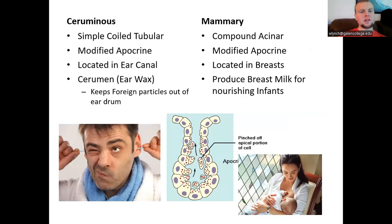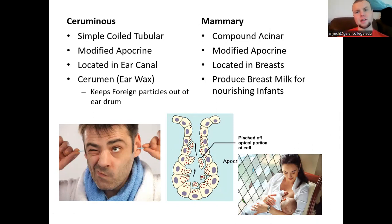In the ear, ceruminous glands are simple coiled tubular glands that secrete cerumen — earwax — which collects foreign particles entering the auditory canal and stops them from reaching the eardrum. Mammary glands are complex compound acinar glands located in the breasts near the areola, producing breast milk to feed infants.